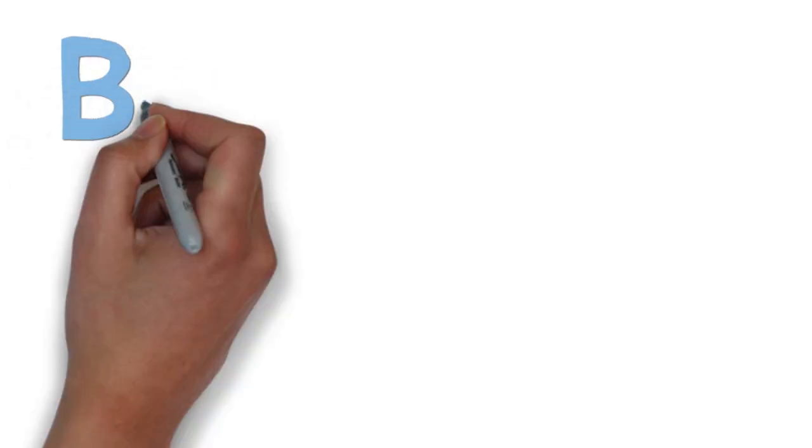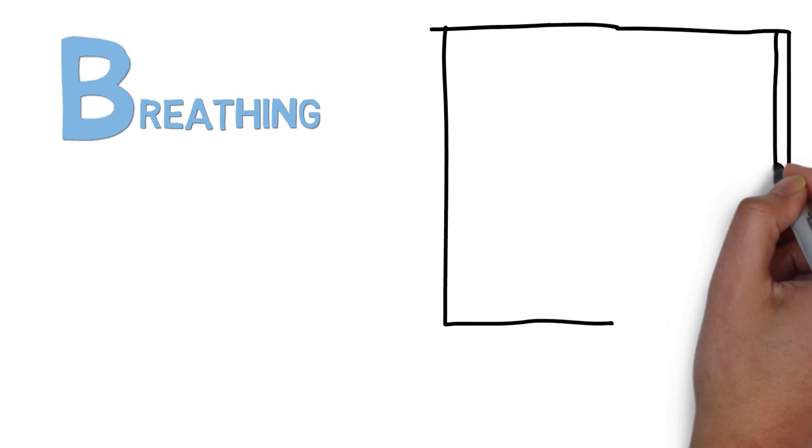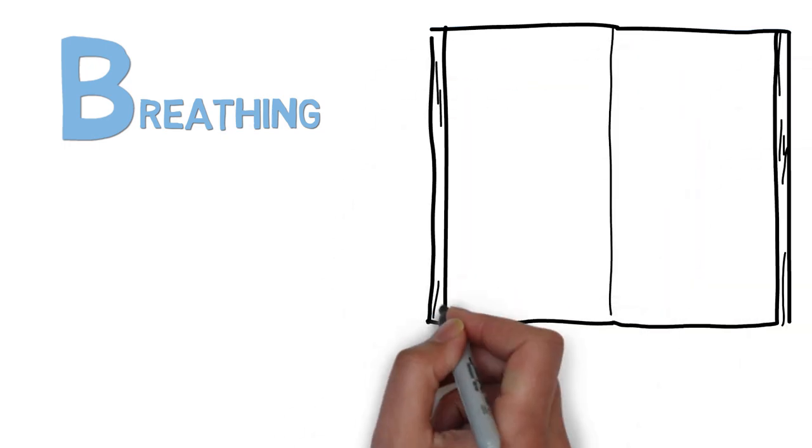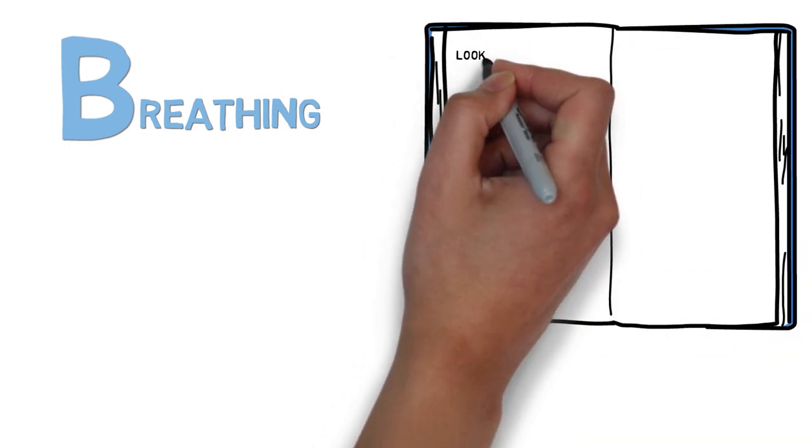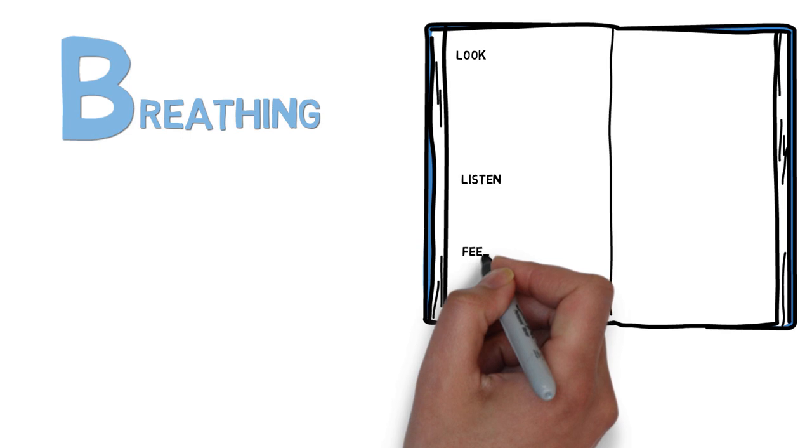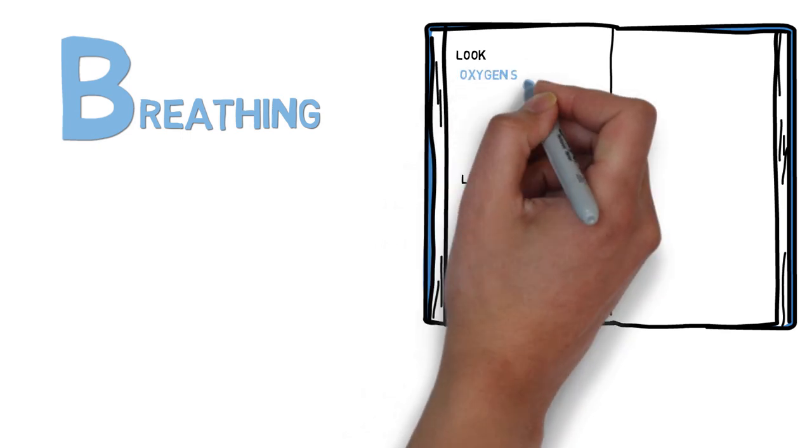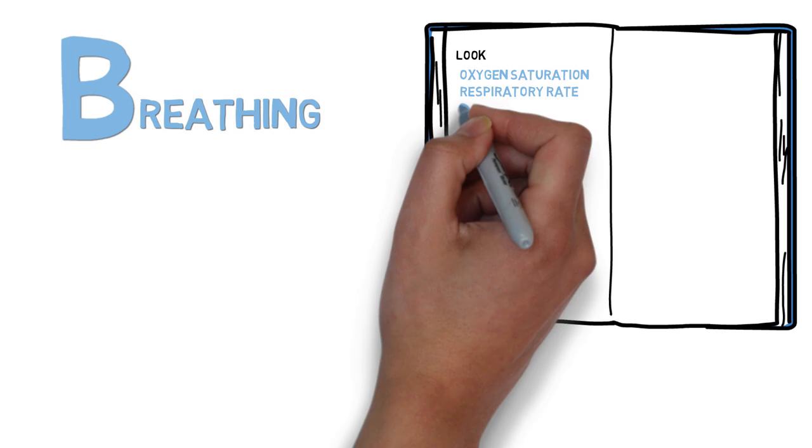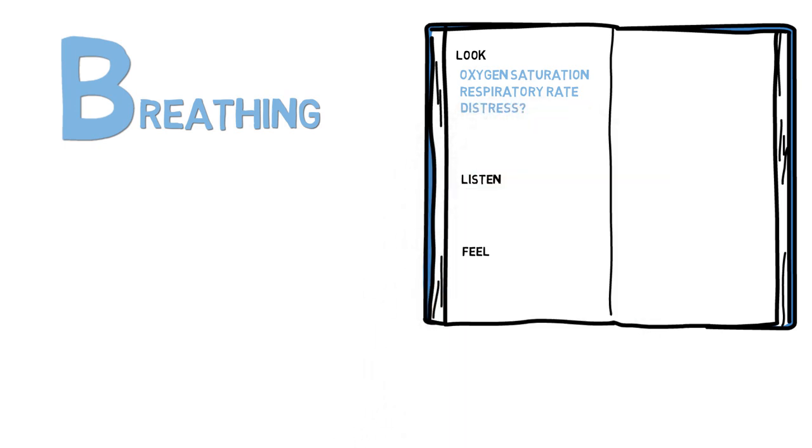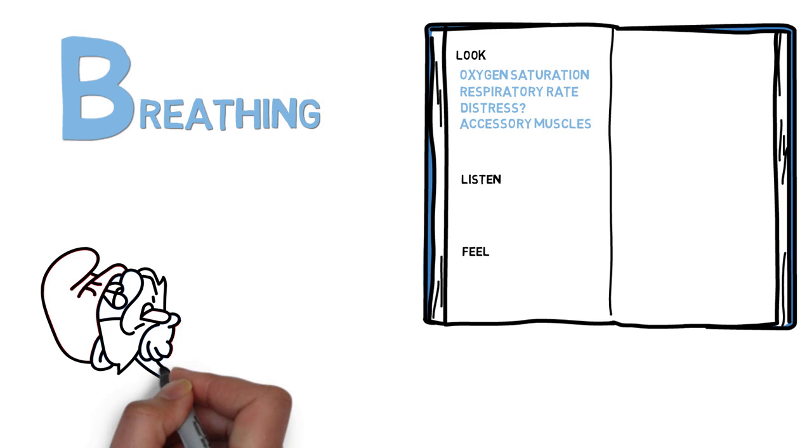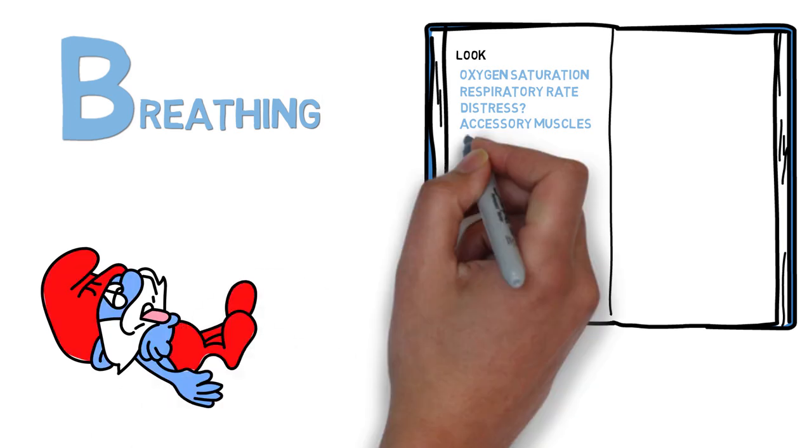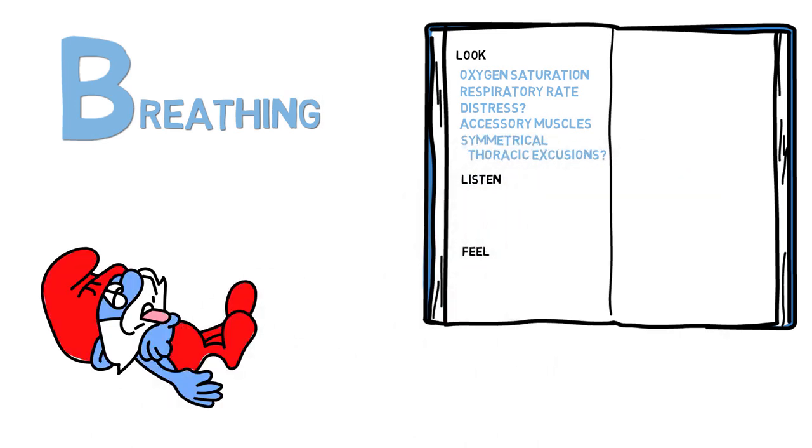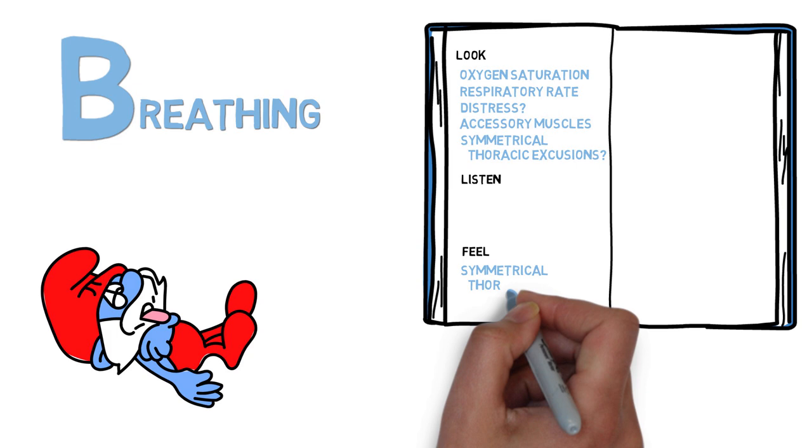B is for breathing. Tissue hypoxia is an immediate threat to life. So if there is a problem with the respiratory system, you need to address it immediately. To assess this, you need vital signs like oxygen saturation and respiratory rate. You'll look at the patient to see if they're in distress, increased respiratory rate, and use of accessory muscles. Is your patient cyanotic? Also, look at thoracic excursions to see if they are symmetrical or not. Asymmetry could indicate pneumothorax.